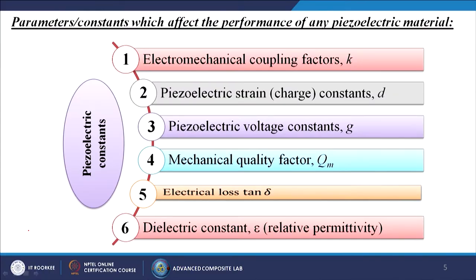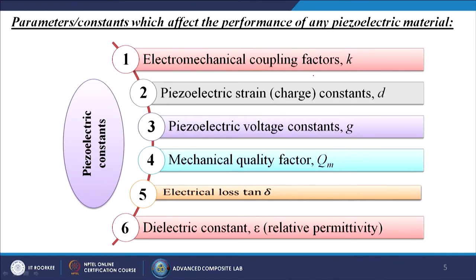By these equations we can calculate the piezoelectric behavior. Now, what are the parameters or constants which affect the performance of any piezoelectric material? Some properties must be present inside the material for it to show the piezoelectric effect. These are: electromechanical coupling factor k, piezoelectric strain/charge constant d, piezoelectric voltage constant g, mechanical quality factor Q_m, electrical loss tan delta, and dielectric constant epsilon (relative permittivity). These are known as the piezoelectric constants.